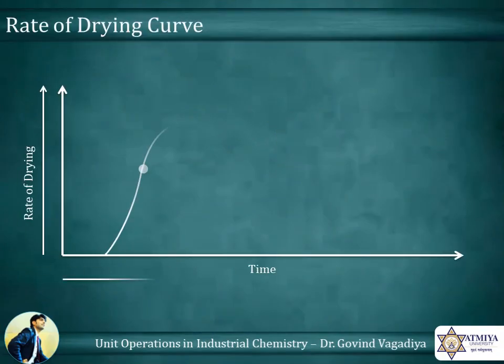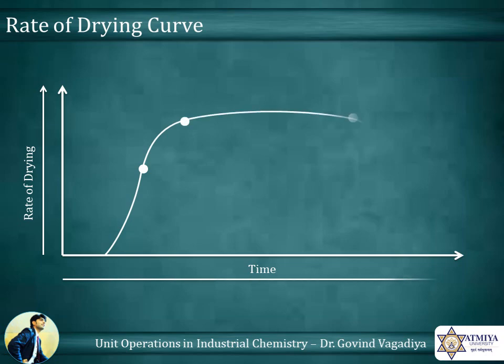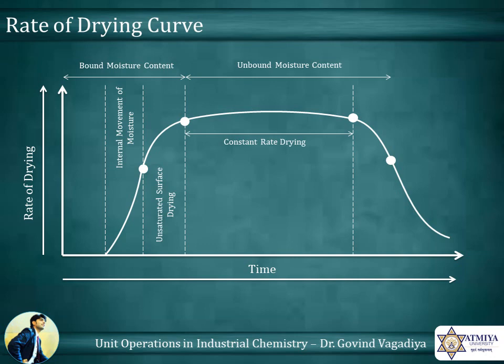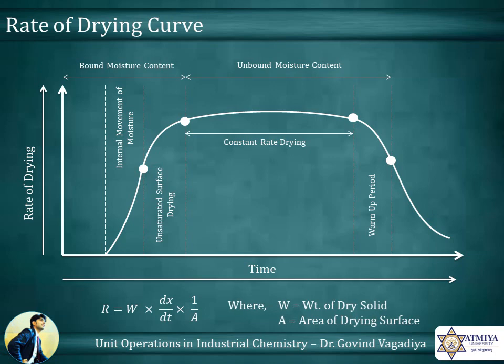The rate of drying curve is divided into three parts. The first part regards the bound moisture content stage, where the rate of drying slowly increases. Then the rate of drying becomes almost constant until it reaches the decline stage. The equations show that the rate of drying depends upon the amount of substance and the area of the drying surface.